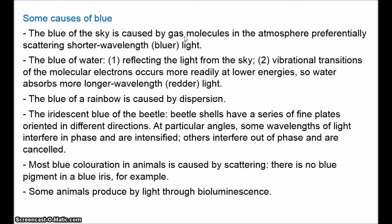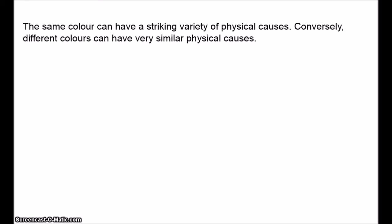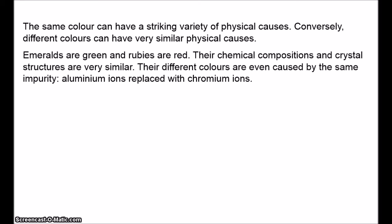Those are just a few examples of the causes of blue. The point is that the same colour can have a very striking variety of physical causes. And the converse is also true: different colours can have very similar physical causes. Emeralds are green and rubies are red, but their chemical compositions and crystal structures are very similar. In fact, the green of emeralds and the red of rubies are both caused by the same impurity — aluminium ions being replaced with chromium ions.